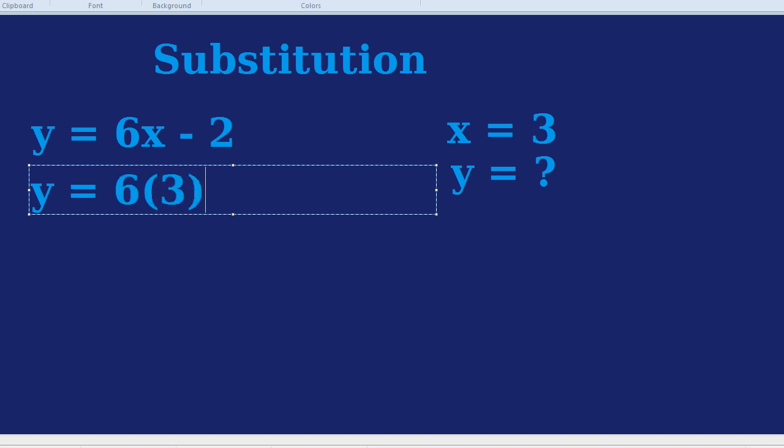The reason why we put it in brackets is to remind ourselves that it was 6 multiplied by x, and brackets means multiplied. Don't think that this becomes 9, or even 63, or something like that. It's 6 multiplied by 3.